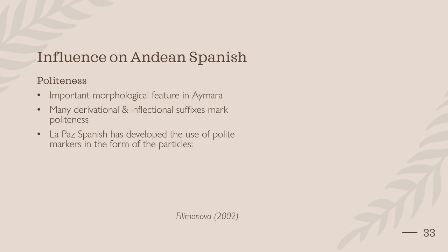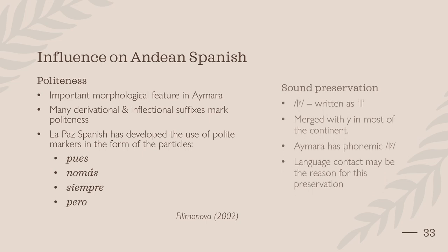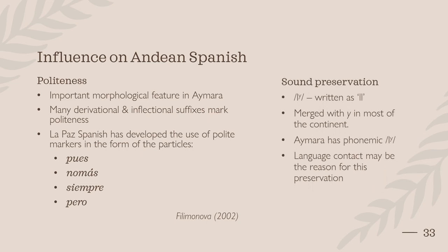Aymara has also influenced Spanish in the local area. Politeness is very important in Aymara, with great morphological emphasis on its expression. It makes use of many derivational and inflectional suffixes to mark politeness, and this abundance of politeness markers has affected local native Spanish speakers. In La Paz Spanish, certain particles are often used to soften or attenuate sentences, which is a notable difference from standard Spanish. Furthermore, the Spanish spoken in the Andes retains the sound LL that has been mostly lost elsewhere on the continent due to merging with Y. This may be due to the fact that Aymara and other Andean languages like Jacare and Quechua have phonemic LL, and language contact between Spanish and Aymara may have preserved this sound.